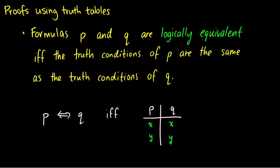Now that we've taken a look at truth tables, we can do some proofs using truth tables. What do I mean by proofs? Well, suppose I have two formulas, P and Q, and I want to know if they're logically equivalent to each other. They're logically equivalent if the truth conditions of P are the same as the truth conditions of Q — meaning the truth table column outputs exactly the same values in the exact same order. Then P is logically equivalent to Q, which means whenever we have P in our formula, we can substitute it with Q and it's the exact same thing.